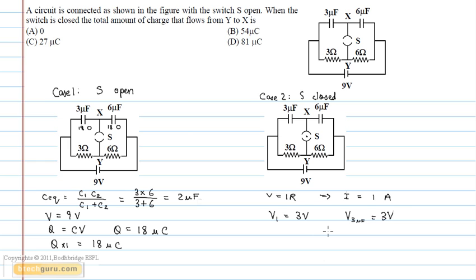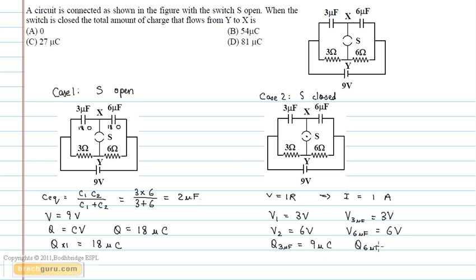The potential difference across the 6 ohm resistor is 6 volts, which is the same as the potential difference across the 6 microfarad capacitor. So the charge on the 3 microfarad capacitor is equal to 9 microcoulombs. The charge on the 6 microfarad capacitor is equal to 36 microcoulombs, distributed in the following manner.